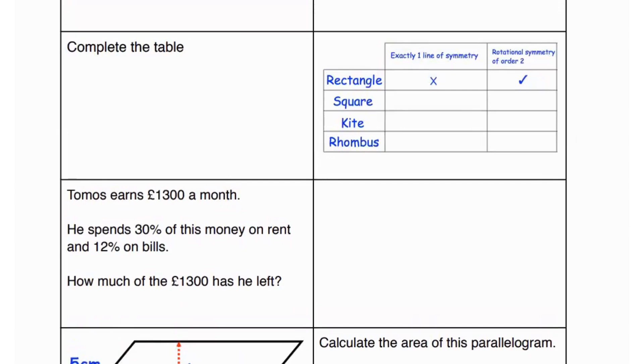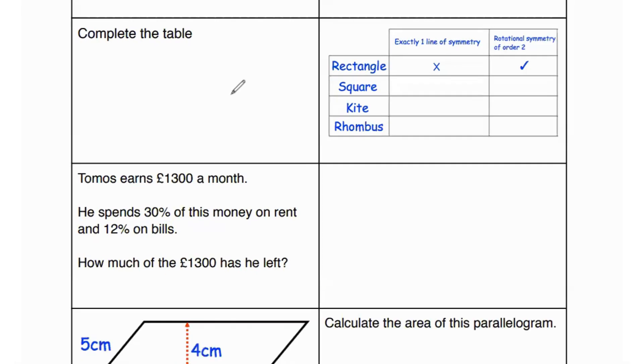In the next one it says complete the table. So we have a column for the line of symmetry and the rotational symmetry. They've given us four different types of shapes. We've already answered one line of symmetry for the rectangle. The rectangle does not have exactly one line of symmetry. The next question says we have to write down which one of these shapes has exactly one line of symmetry and rotational symmetry.